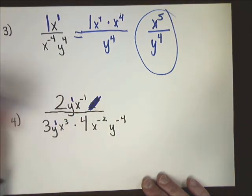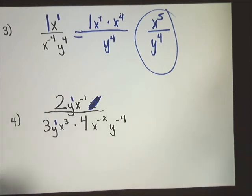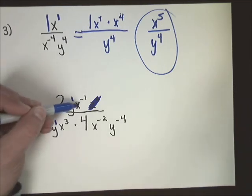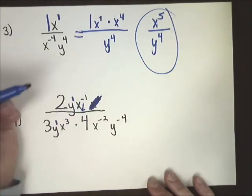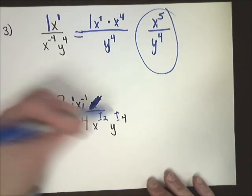Now I'm going to start flipping things around to make it look nicer. This x to the negative one I'm going to move to the bottom, so I'm going to make a note to myself to move that down. These two both move up.